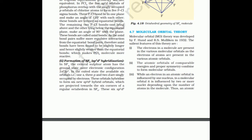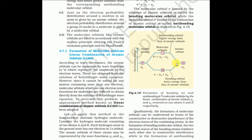For H2 molecules, we look at the 1s atomic orbital. Two hydrogen atoms each contribute a 1s atomic orbital. These two 1s atomic orbitals combine, and from two atomic orbitals, two molecular orbitals are formed.